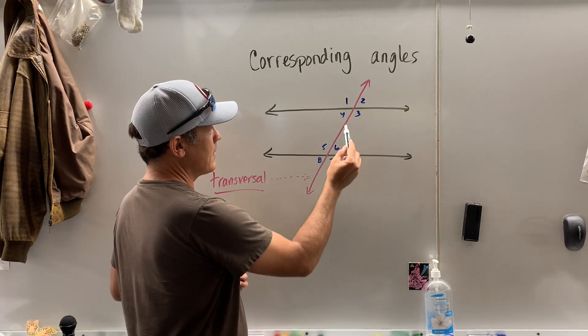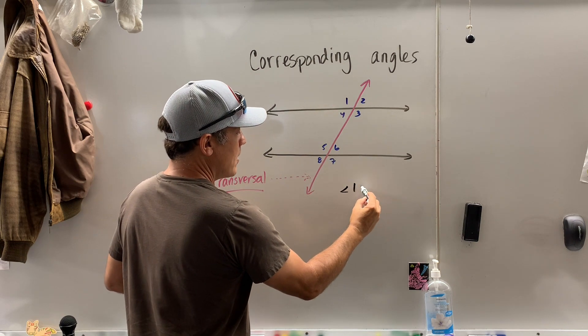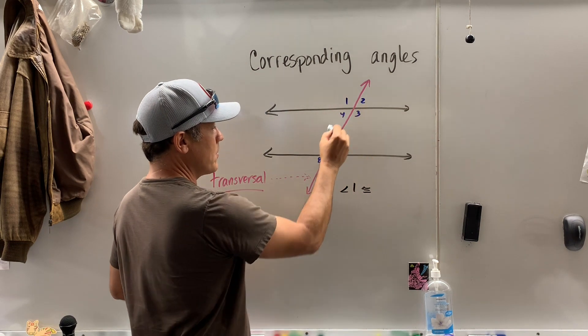If the lines are parallel, then angle 1 is congruent to angle 5.